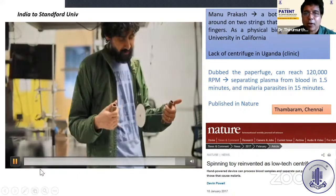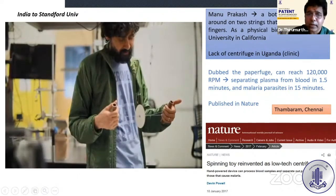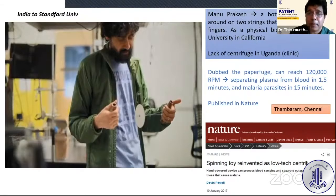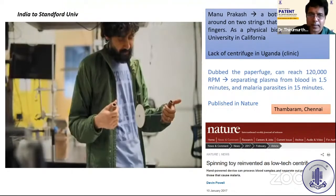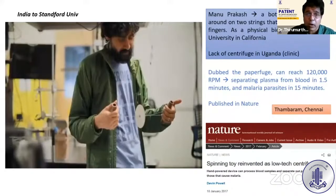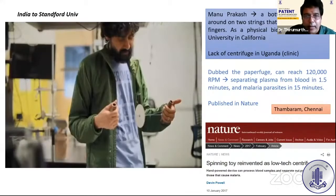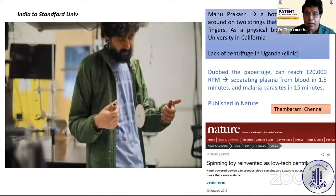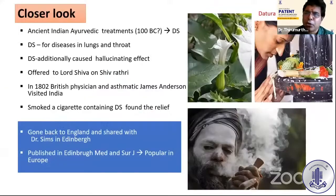This is an example of how an idea converted into a paperfuge centrifuge running at 1,20,000 RPM under 38,000 G — something remarkable. You don't need a fancy laboratory. What we call Jugaad — there is no equivalent word in English for Jugaad — but Jugaad is the innovation. This paper came in Nature and subsequently got an award.